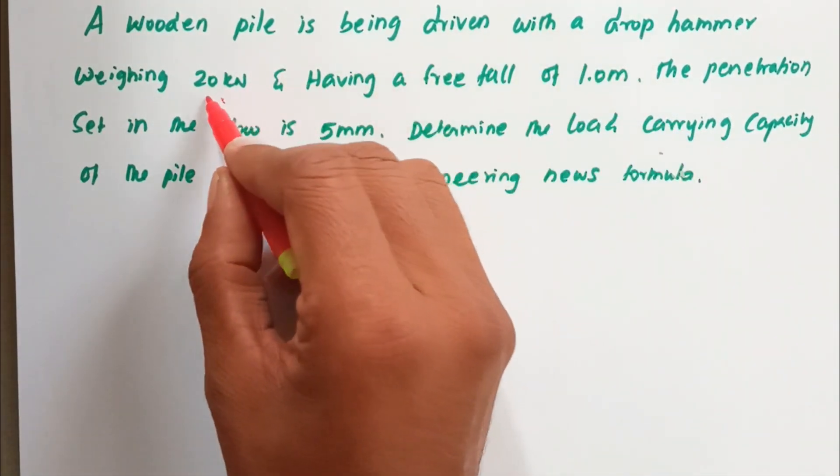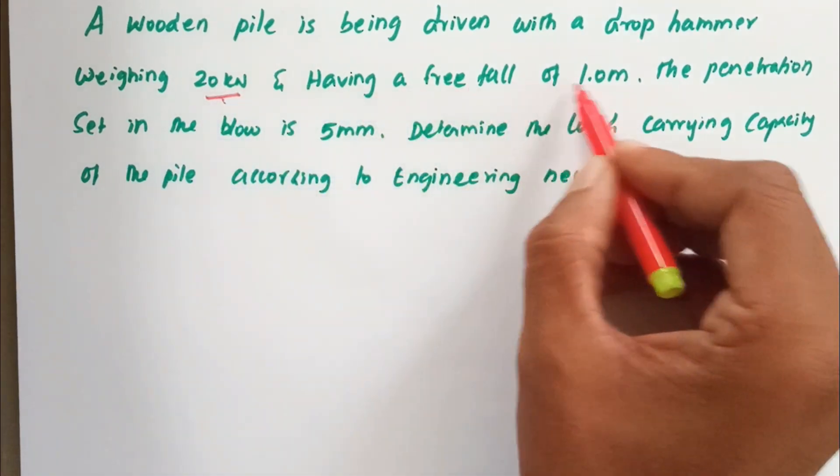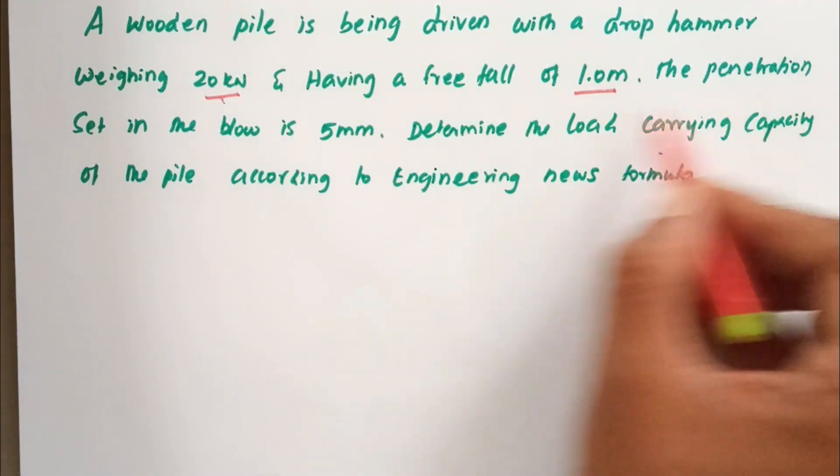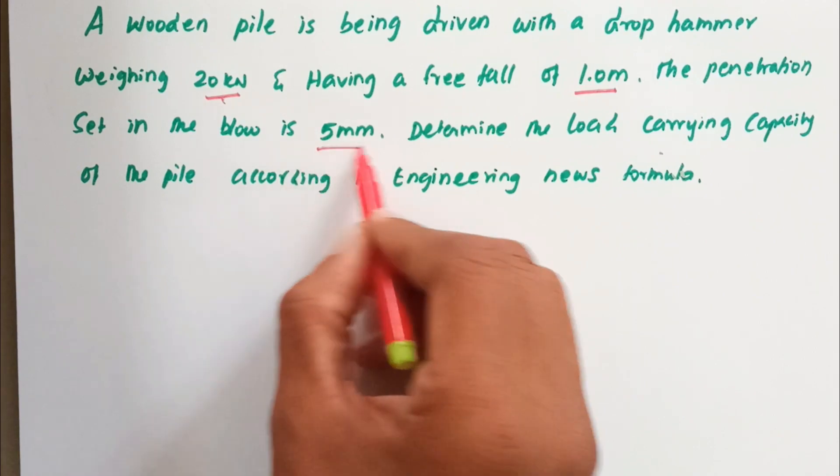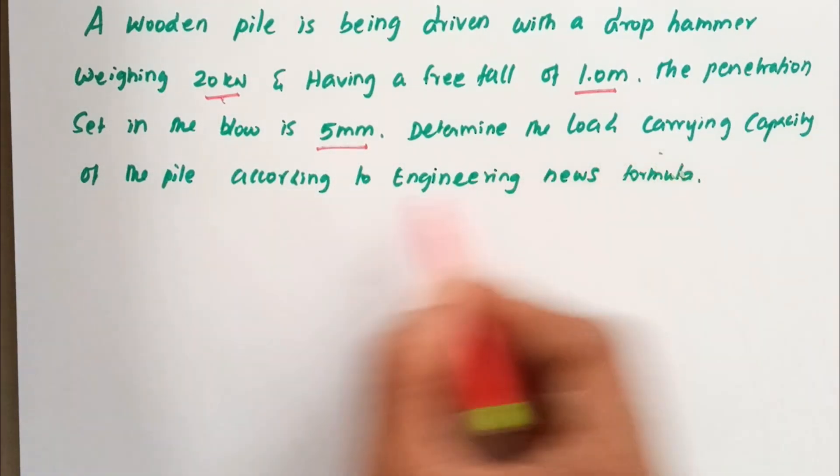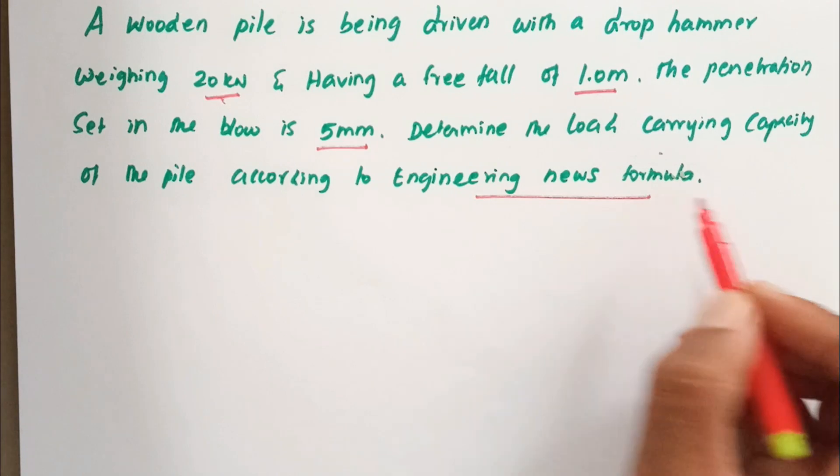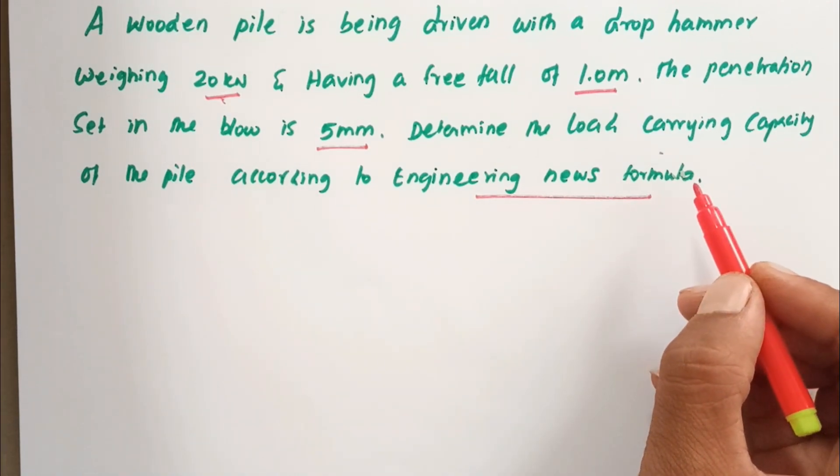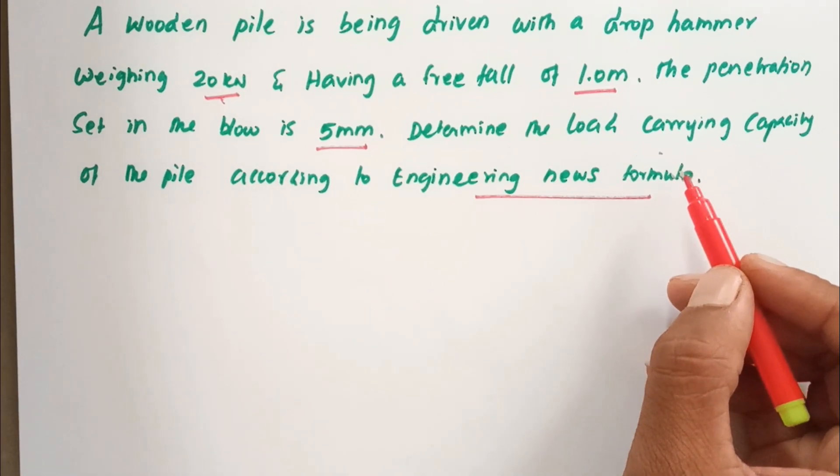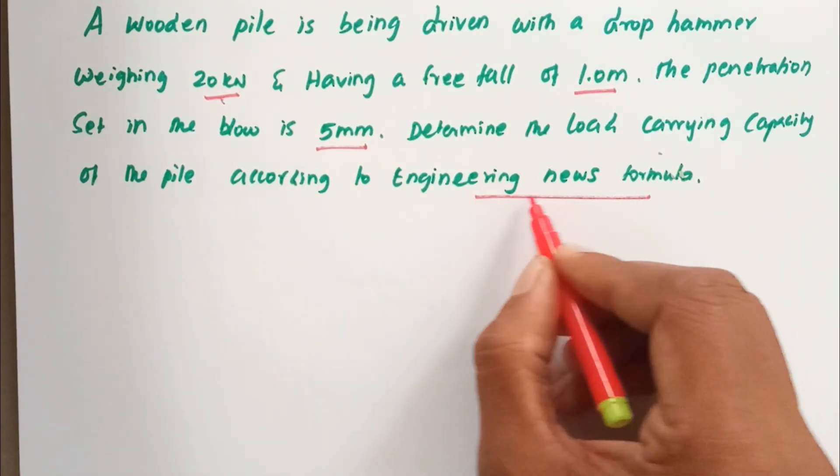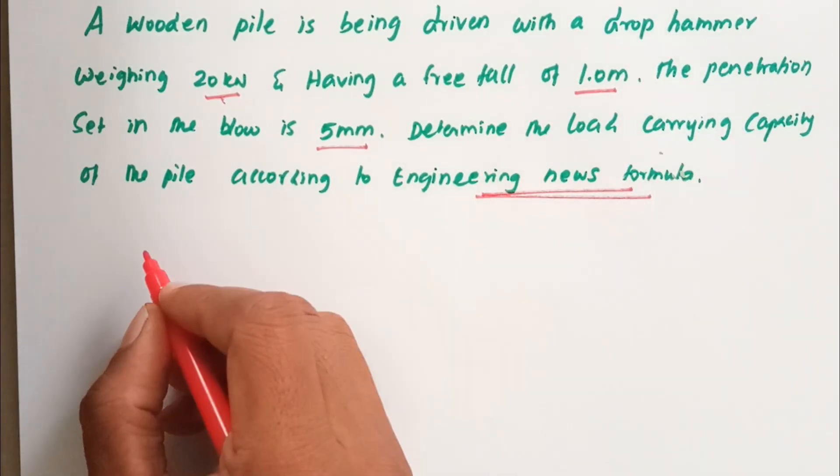The hammer weighs 20 kilonewtons and has a free fall of one meter. The penetration per blow is 5mm. Determine the load carrying capacity of the pile according to the engineering news formula. We have to find out the pile carrying capacity using the engineering news formula.